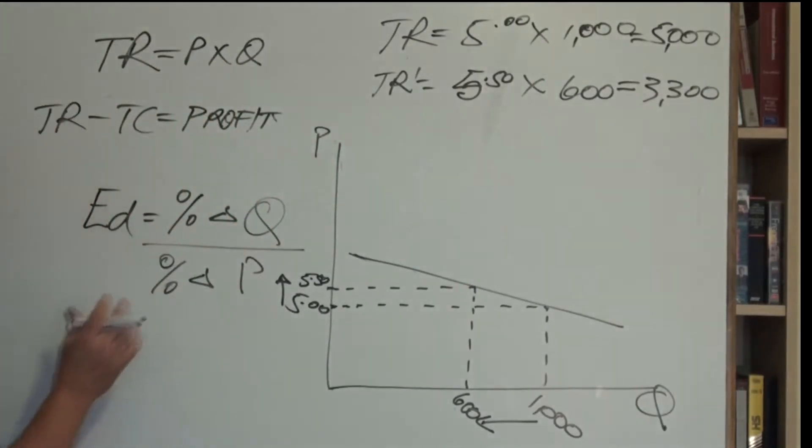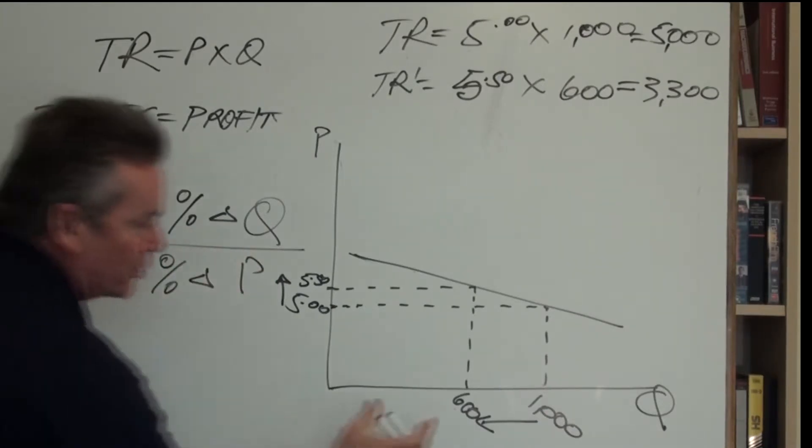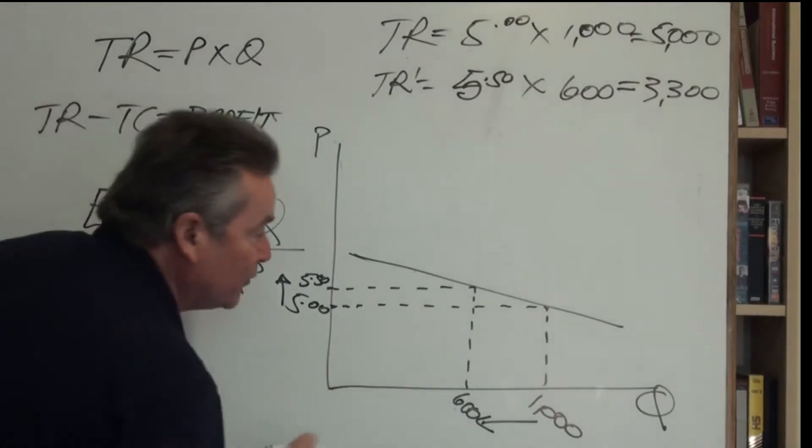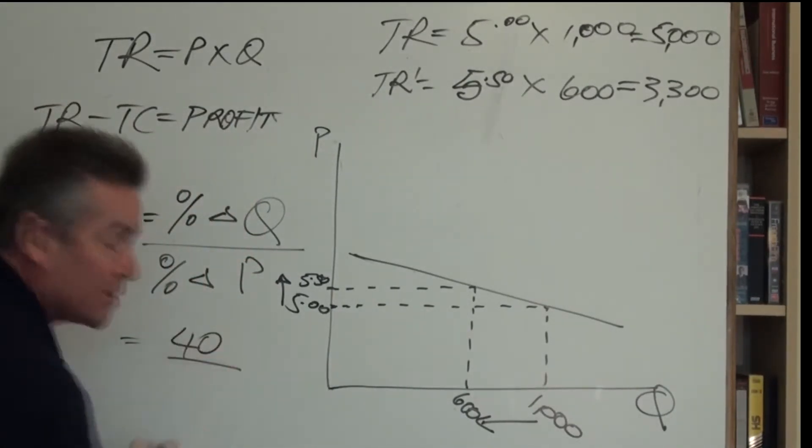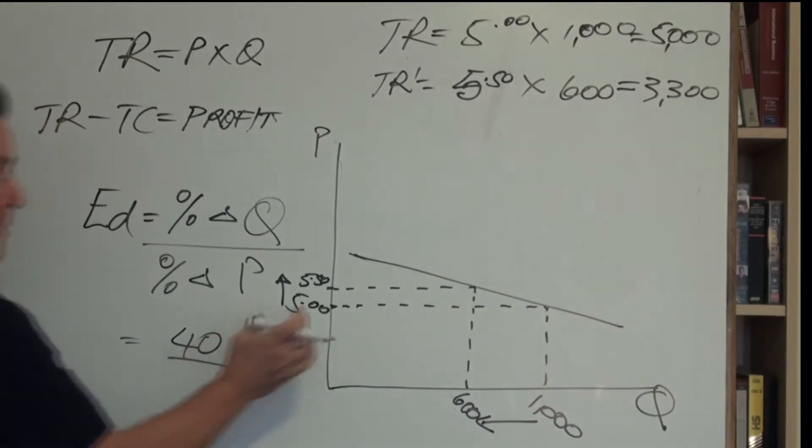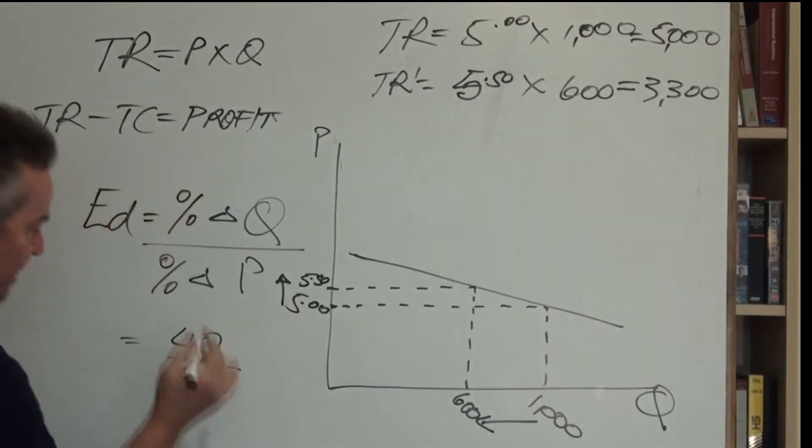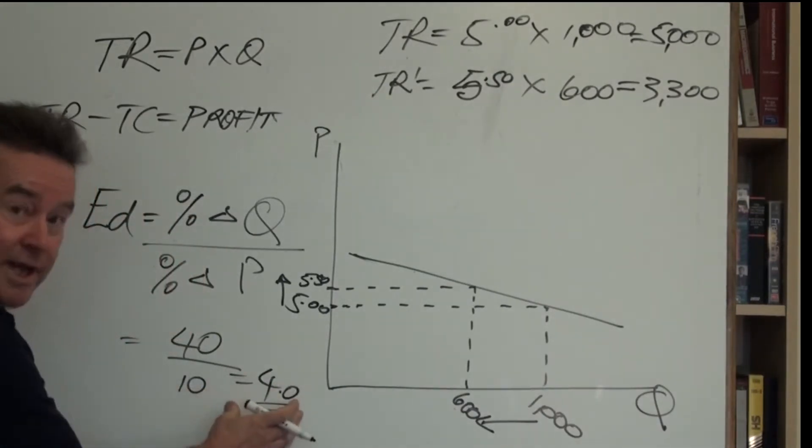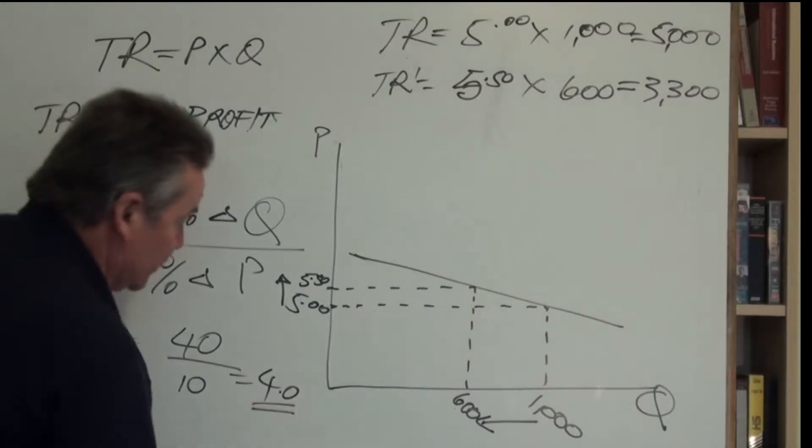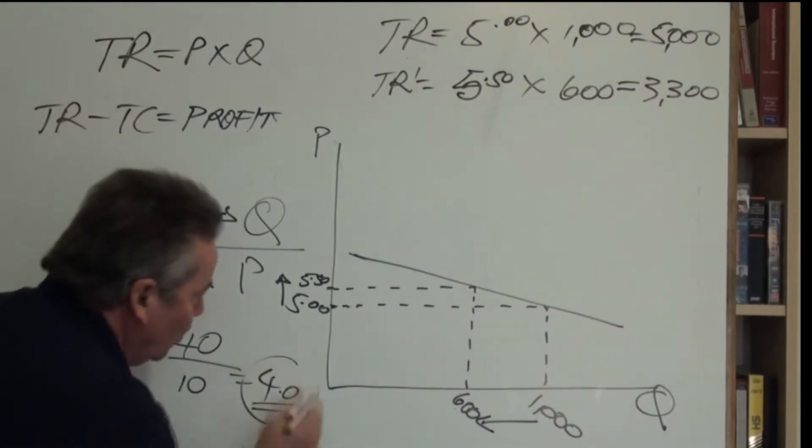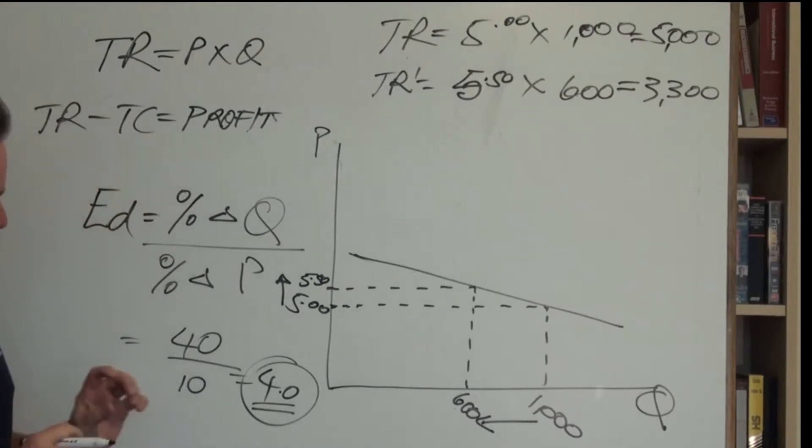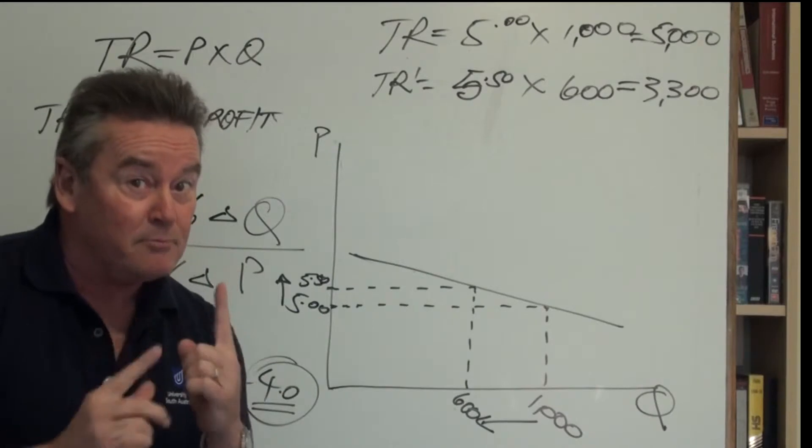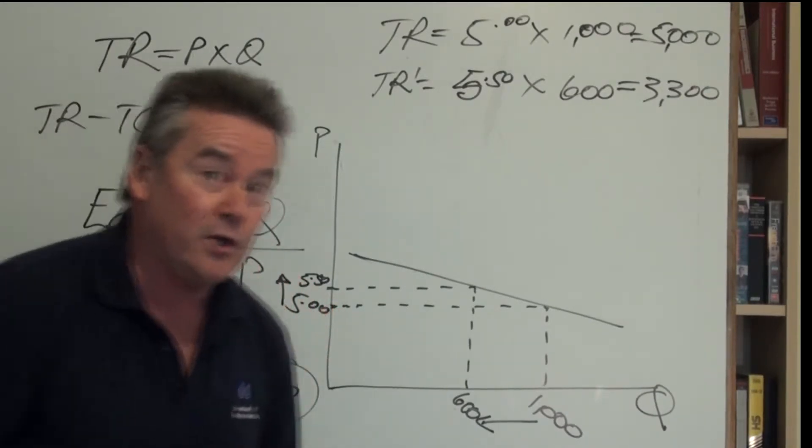So we go back over here, and we can see that our percent change in Q - well, the drop is from 1,000 to 600, a drop of 400. So our percent change in Q was actually 40%. The percent change in P, the price rise, clearly only 10%. It's given us a little figure, which we call our elasticity coefficient - a figure of 4. What does this 4 actually mean? It means that for every 1% change in P, there's a 4% change in Q.